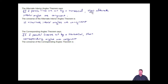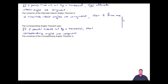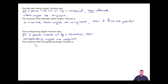We took the then statement and made it an if statement: if alternate interior angles are congruent, then two lines are parallel. And the converse of the corresponding angles theorem puts that statement first: if corresponding angles are congruent, then two lines are parallel.